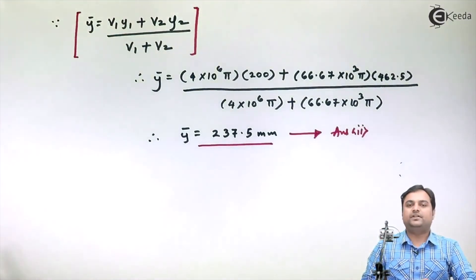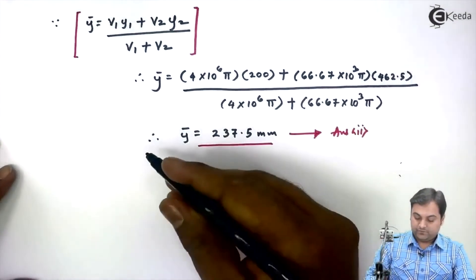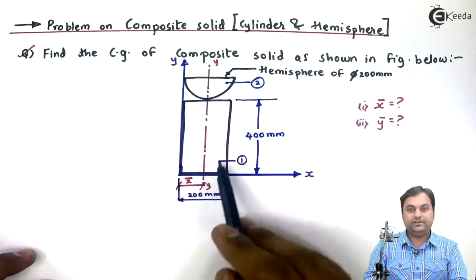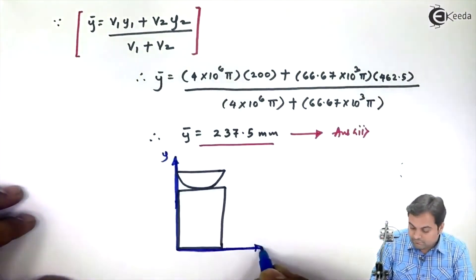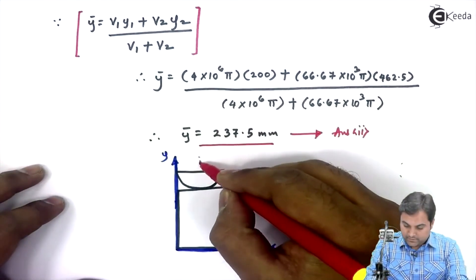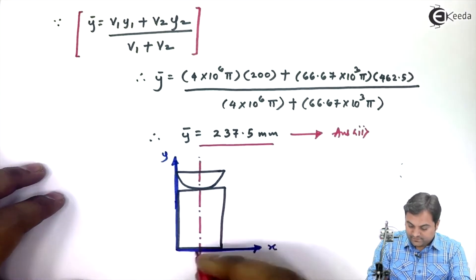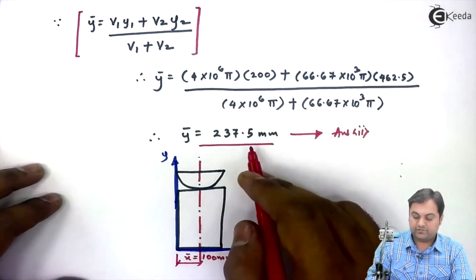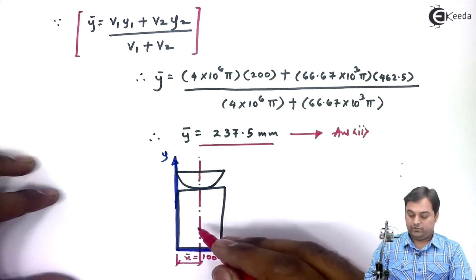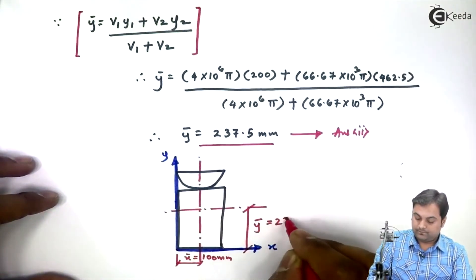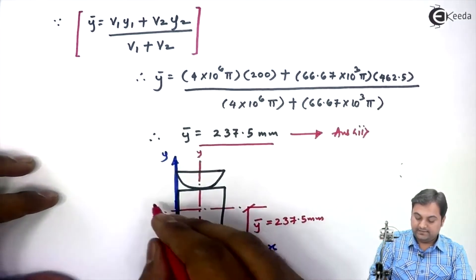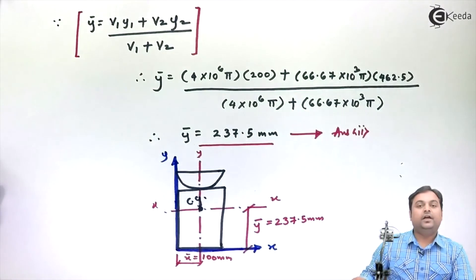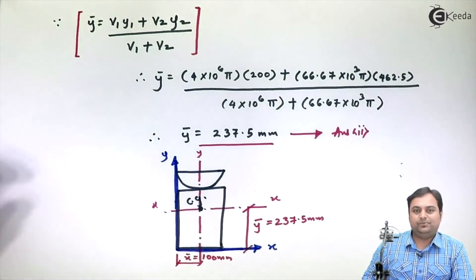Now that we have calculated X-bar and Y-bar, we can locate the CG on the composite solid. Drawing the diagram again with the hemisphere on top of the cylinder: the Y-axis is at distance X-bar of 100 mm from the side, and Y-bar is 237.5 mm from the base, which is just above half the cylinder height of 400 mm. The intersection of the X and Y axes gives us the CG of the composite solid, and the problem is complete.